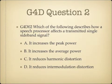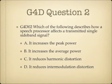Question 2. Which of the following describes how a speech processor affects a transmitted single sideband signal? A. It increases the peak power. B. It increases the average power. C. It reduces harmonic distortion. Or D. It reduces intermodulation distortion.